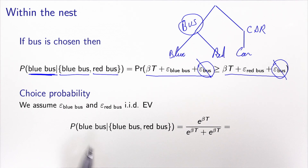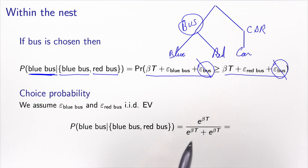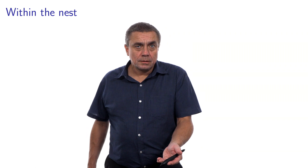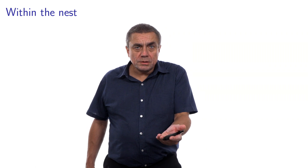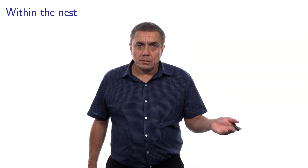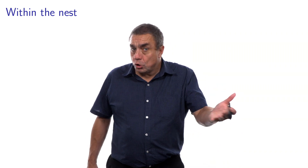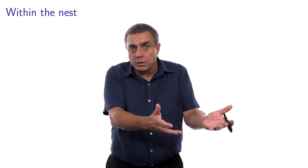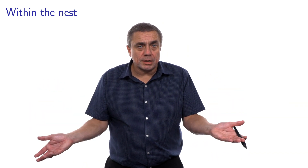This probability equals e to the beta*t divided by e to the beta*t plus e to the beta*t, which is one half. This result makes sense: if we consider people who have already decided to take the bus, the model predicts they will be indifferent to the color of the bus, meaning there is a 50% chance for either red or blue bus.